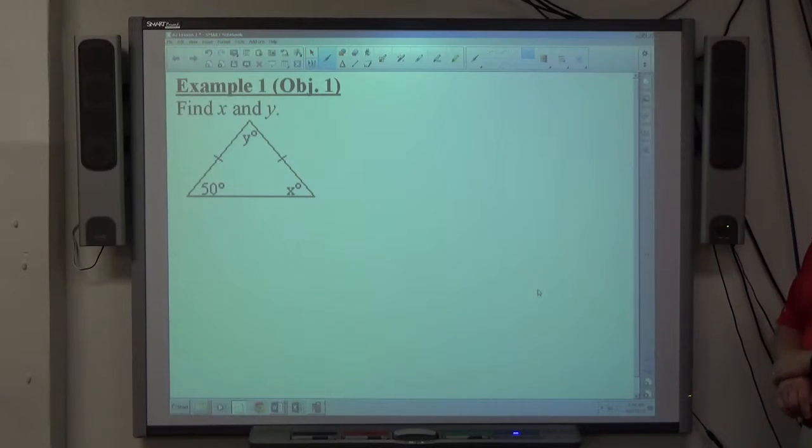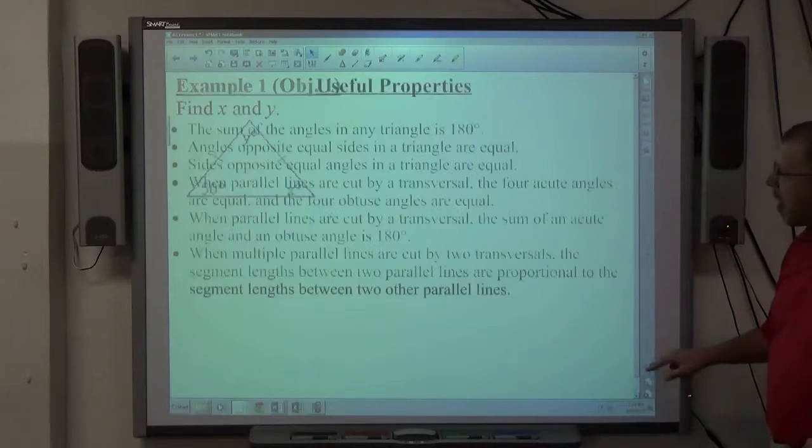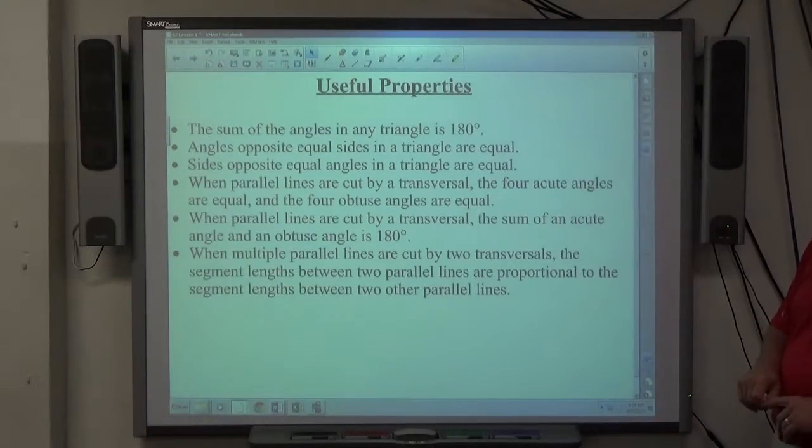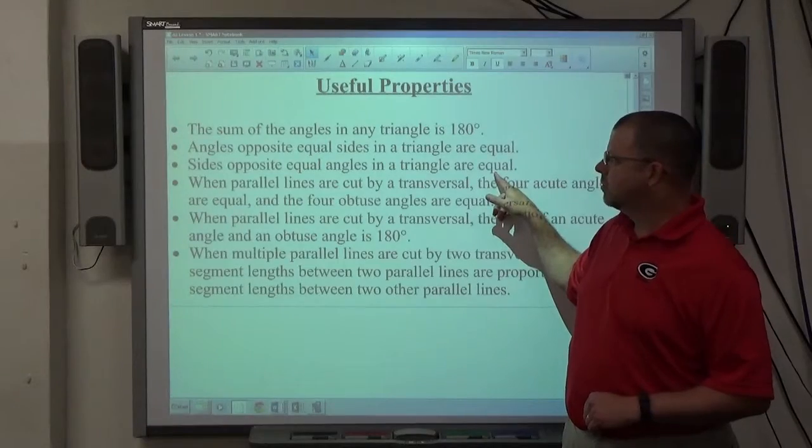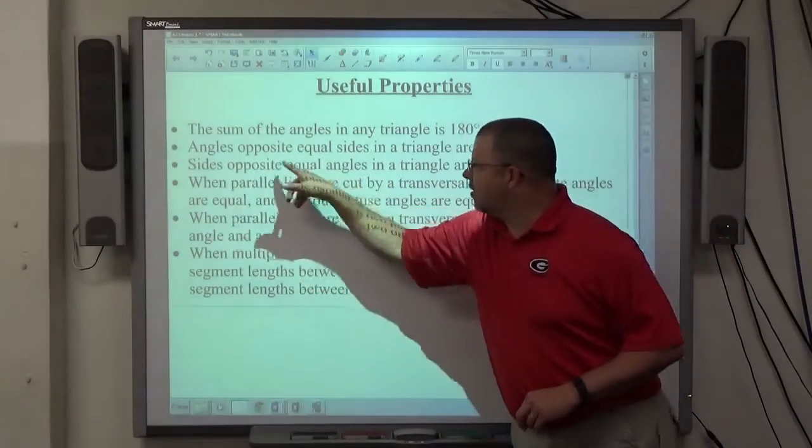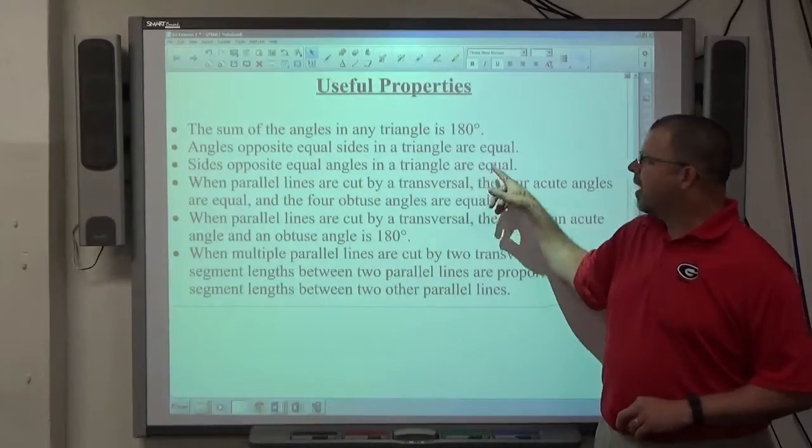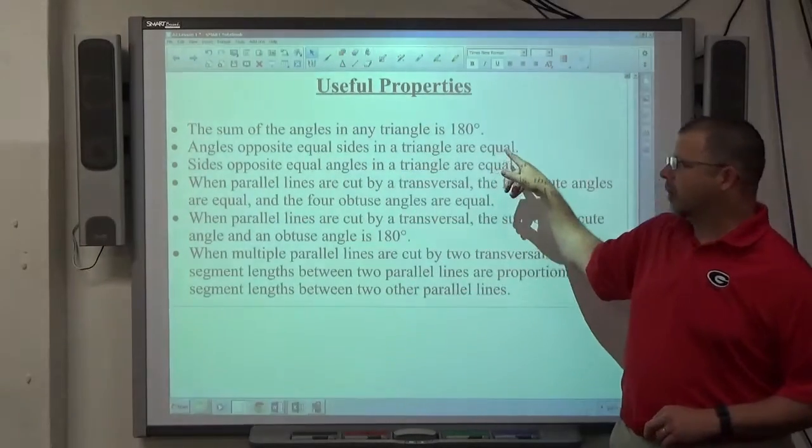One property of an isosceles triangle, which hopefully is on this page of the properties I gave you: sides opposite equal angles in a triangle are equal. So sides that are opposite equal angles are equal. Angles opposite equal sides in a triangle are equal.